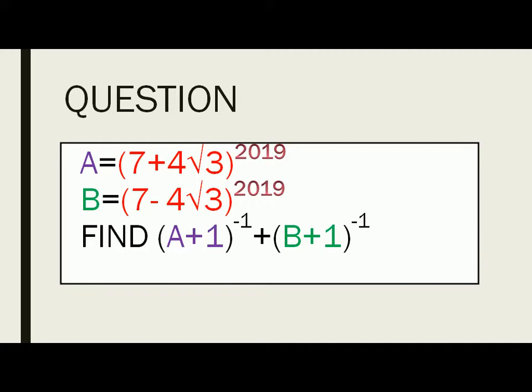And B is given as 7 minus 4 root 3 whole raised to the power 2019. Now you are asked to find the value of A plus 1 whole power minus 1 plus B plus 1 whole power minus 1. And I feel this is a good question.